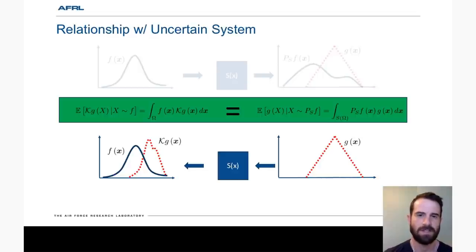They're different means to the same ends. Essentially, we can push density forward through the system or pull the observable back through the system in these calculations as they are adjoint operations.